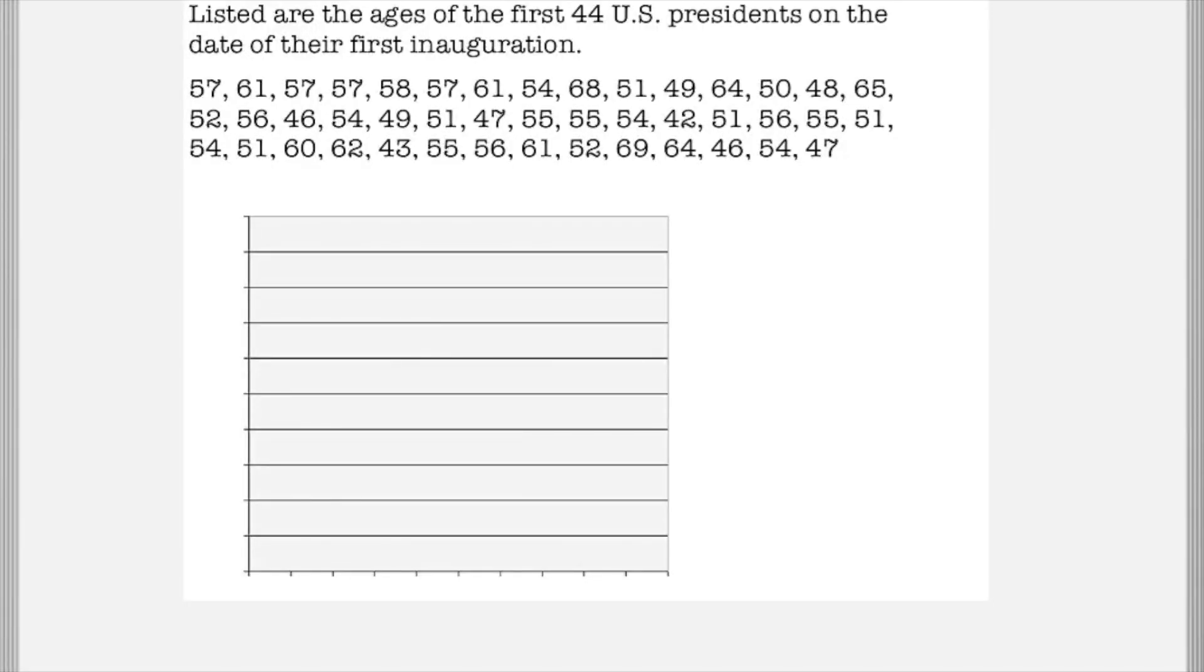For this part, we're going to create a histogram. Listed are the ages of the first 44 U.S. presidents on the date of their first inauguration. It's not important that you put them in order from least to greatest, that would be a little bit crazy. So you're going to use color coding or colored pencils and identify ranges of numbers. First, we want to also identify the y and x axis and label our graph. We're going to label the side frequency and the side ages.